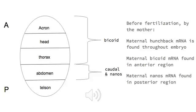We have divided the segments and identified what protein is responsible for each segment. As you can see depicted, Bicoid is in charge of acron, head, and thorax fates, while Caudal and Nanos are responsible for the abdomen and the telson.